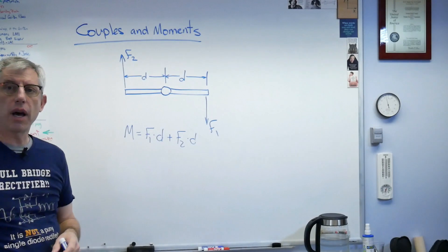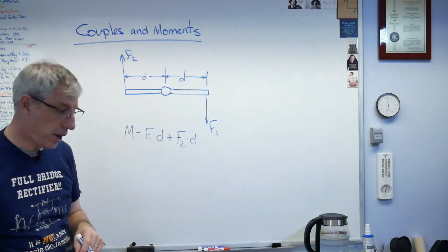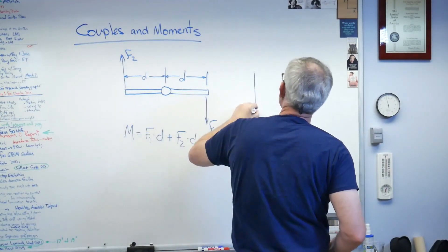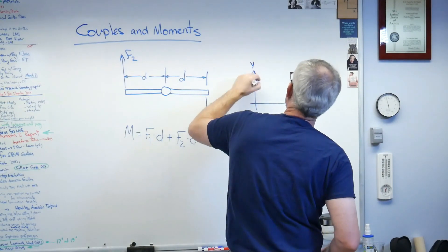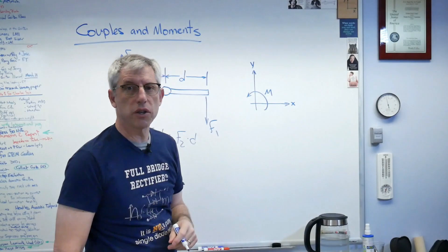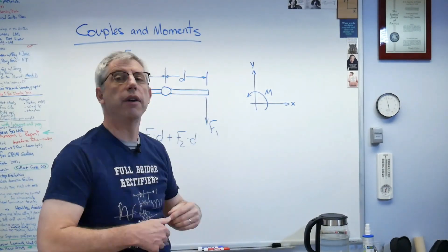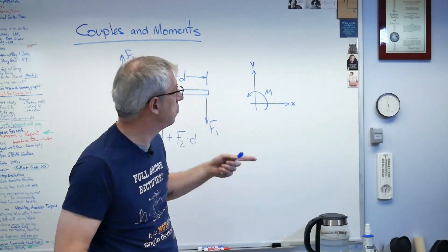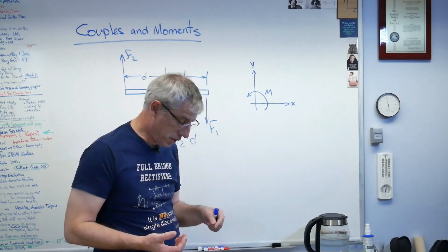Now, I've got to decide which direction I want to be positive or negative rotation. So you always, always, always put your coordinate system there. If you don't know what else to do, you don't have a reason, use that as your coordinate system. This will work almost all the time.